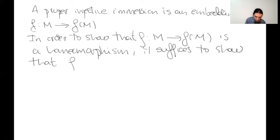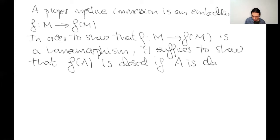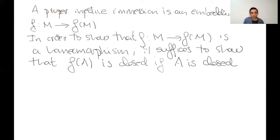Let's write down that the image of A is closed if A is closed. That guarantees in particular that the image of an open set is also open, and that implies that the inverse map is continuous. So this map F is a homeomorphism from M to its image.